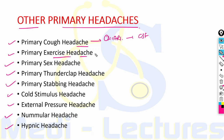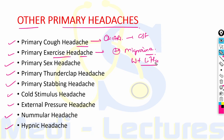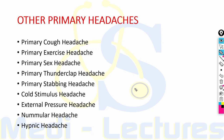Primary exercise headache has features of primary cough headache along with features of migraine — precipitated by exercise, pulsatile in nature, less than 48 hours in duration, throbbing and bilateral. A specific entity is weightlifter headache due to acute venous distension in the cranial region. Cardiac cephalgia — during exercise, angina pain can be referred to the head through vagal connections. Pheochromocytoma can present as exercise headache due to adrenaline and noradrenaline stimulation. Treatment is indomethacin; ergotamine and dihydroergotamine can be used for prevention.